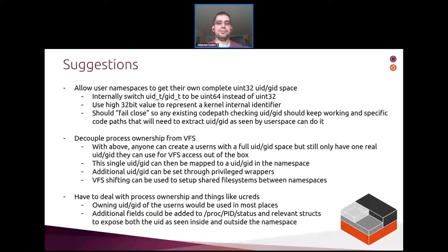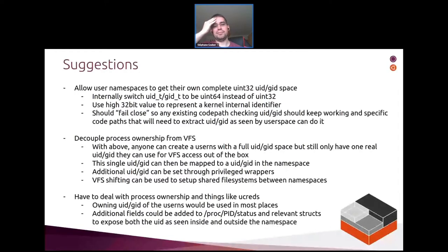Some of this was presented last year. One source of confusion was that we were tangling both the allocation of user namespaces and the VFS issues together. We've been able to untangle that throughout the year. VFS ID mapping is now very much a thing — Christian did a great job getting that done and merged — and we're adding support for more and more file systems, so that aspect can be treated separately.